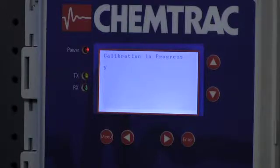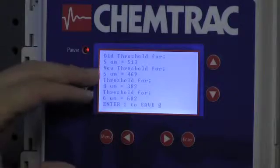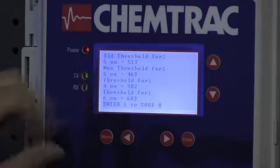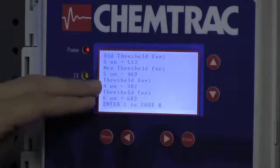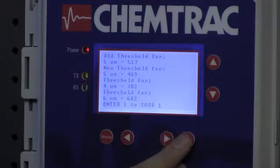Once again, it'll take about 10 to 15 seconds. It's going to show us our old threshold value of 513, our new threshold value of 469, and our neighboring thresholds. So to accept that, we change it to 1, and hit enter to save.